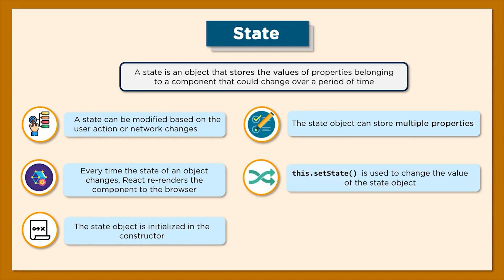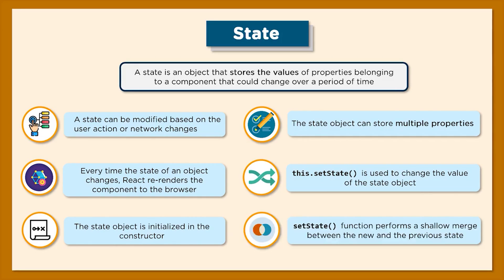A method called setState is used to update the value of the state object. This function performs a shallow merge on the new and the previous state. Conventionally, a shallow merge ensures that the previous state values are overwritten by the new state values. Now that we've learned all about state, let's go ahead and build an application to see the working of state.